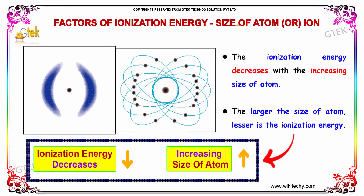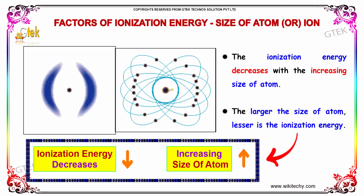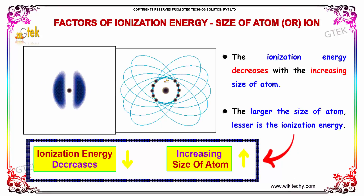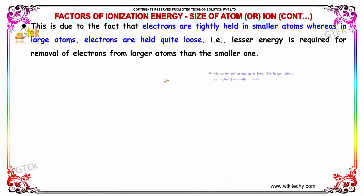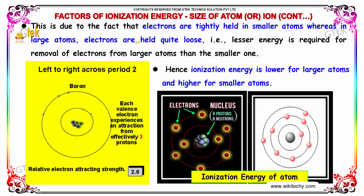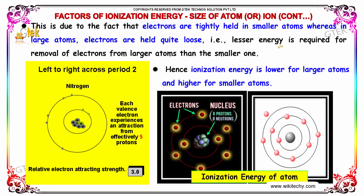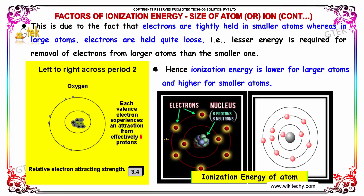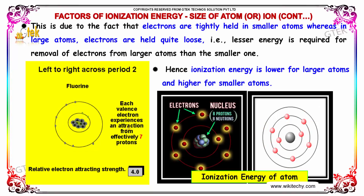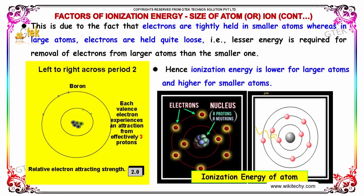The first factor is the size of the atom or ion. The ionization energy decreases with increasing size of the atom. The larger the size of the atom, the lesser is the ionization energy. This is due to the fact that electrons are tightly held in smaller atoms, whereas in large atoms, electrons are held quite loosely. Therefore, lesser energy is required for removal of electrons from larger atoms than smaller ones. Hence, ionization energy is lower for larger atoms and higher for smaller atoms.